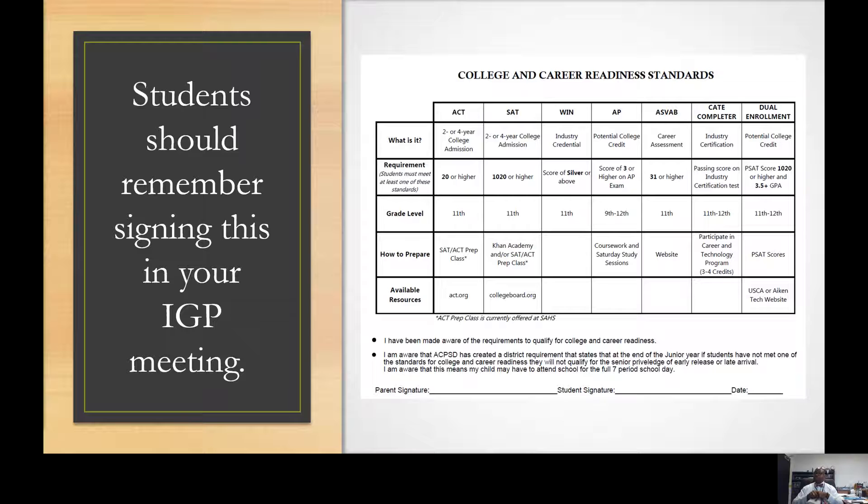20 or higher on the ACT, 1020 or higher on the SAT. SAT has a super score ability, so if you've taken the test more than once, you can combine the highest score you've had in both areas. Please make sure that you are aware of that, and we went over this with you. Please make sure you pay attention to that in regards to your early dismissal.